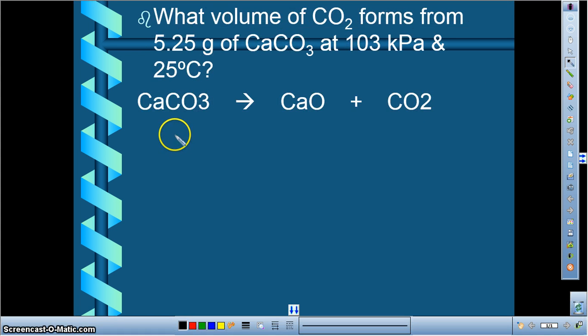So we need to start off with a balanced chemical reaction. The subscripts, of course, are larger than they should be. We're just going to not have to worry about that. We're going to write down the information we have underneath the reactants and products that we have. So it wants to know what volume of CO2, so I'm going to put X equals how many liters.